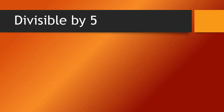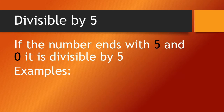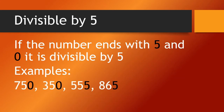Divisible by 5: if the number ends with 5 and 0, it is divisible by 5. Examples: 750, 350, 555, 865.